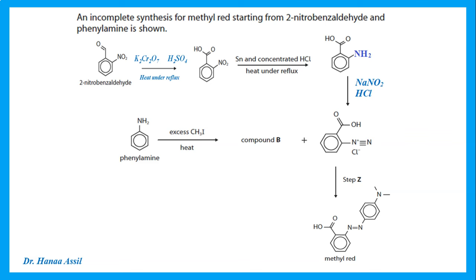Now we react the diazonium salt with compound B. Compound B is made from phenylamine and excess methyl iodide — the methyl iodide substitutes both hydrogens on the amino group with two methyl groups, giving a dimethylamino group. Reacting the diazonium salt with compound B in the presence of sodium hydroxide at 5°C gives methyl red. Remember, 5°C is always required for diazonium salt reactions because the salt decomposes at higher temperatures.